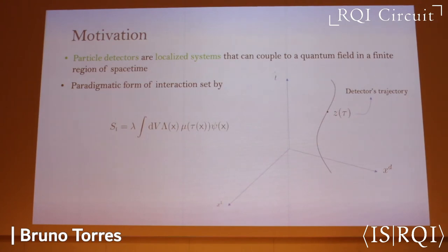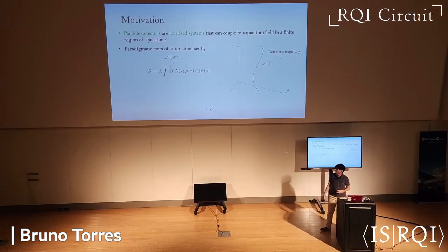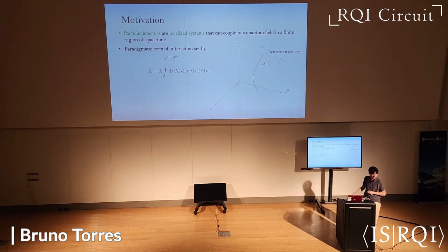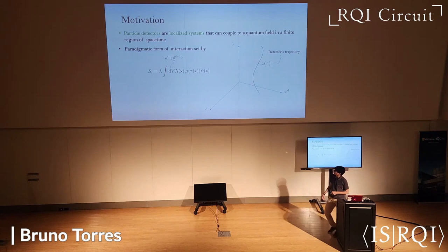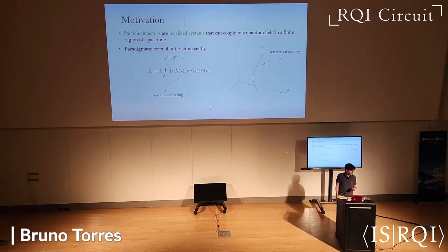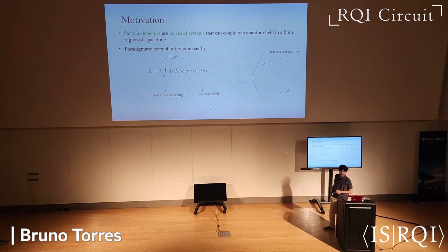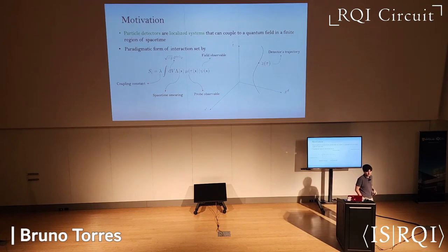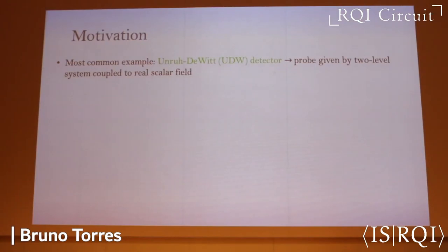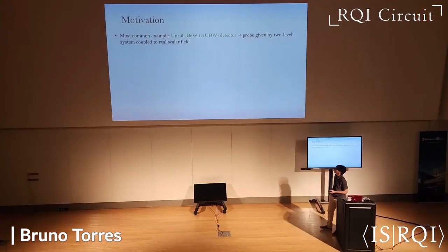We have an interaction action that couples — I'm writing this in terms of an interaction action instead of a Hamiltonian because I'm going to be using path integrals, so this will fit better with the framework. There's some integral over the spacetime volume form of some spacetime smearing that dictates the location of the interaction between field and detector, some probe observable, some field observable, and a coupling constant kept for bookkeeping purposes. In perturbation theory, our most common example of a particle detector is